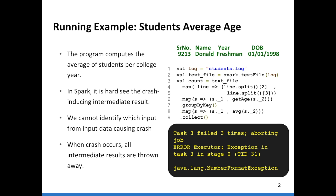In this example, I am computing the average age of the students per college year. The dataset that I am using contains rows where each row contains the serial number, the name of the student, the year the student is in, and the date of birth of the student. The program first extracts the college year and the date of birth of the student at line number 4.